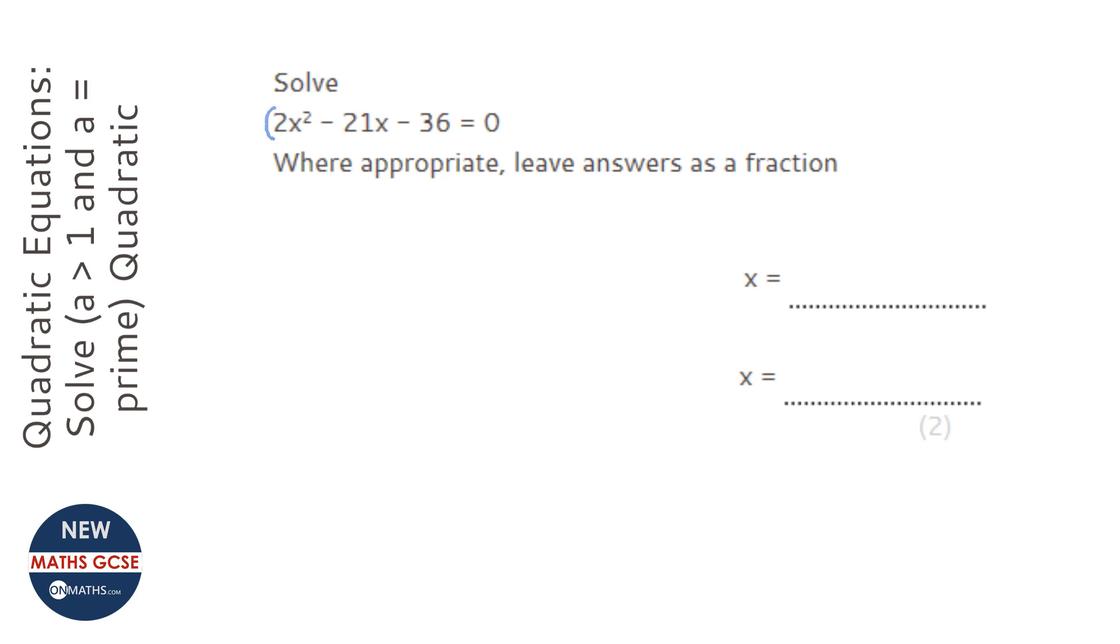So the first thing we need to do is grab that coefficient of x squared and this one here, multiply them together, so 2 times minus 36, which is minus 72.